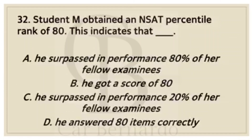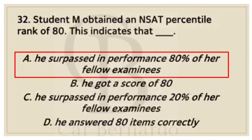Number thirty-two: Student M obtained a percentile rank of 80. This indicates that — Letter A: He surpassed in performance 80% of his fellow examinees. Letter B: He got a score of 80. Letter C: He surpassed in performance 20% of his fellow examinees. Letter D: He answered 80 items correctly. Answer: Letter A, He surpassed in performance 80% of his fellow examinees.